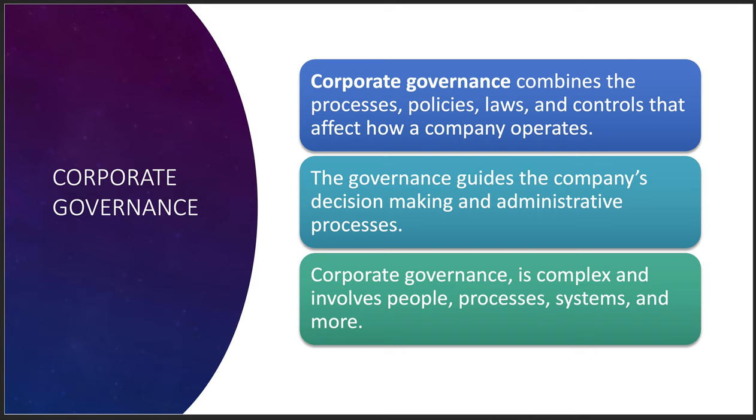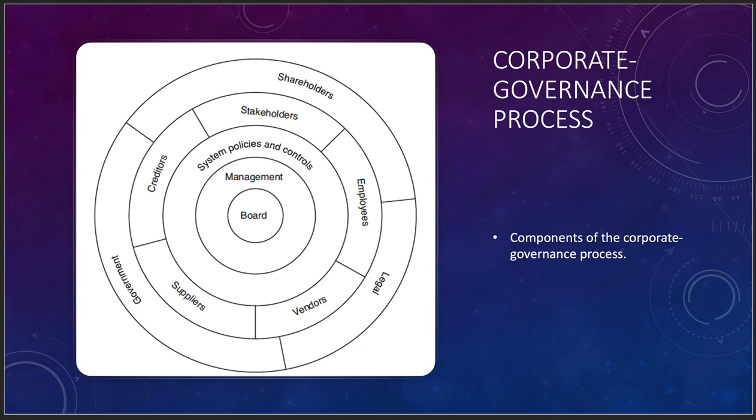The components of corporate governance include your board, management, and system policies and controls — which can be technical or policy-based controls. Creditors, stakeholders, employees, vendors, and suppliers are all part of it, but they're all put under pressure by government and legal requirements. Shareholders are also interesting here because you might have activist shareholders that want you to do things in a way that may be contrary to what government or legal wants.